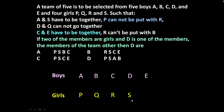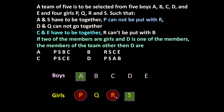We have to select a team of 5 out of these 5 boys and 4 girls, such that 2 girls and 3 boys are there. Now A and S have to be together — let us indicate it by a square. Square means they have to be together. This is a code we have decided.